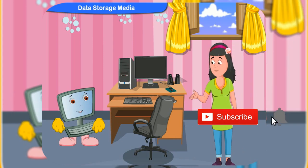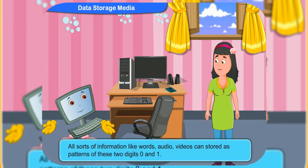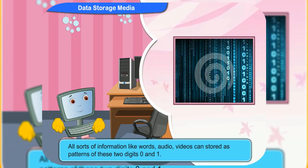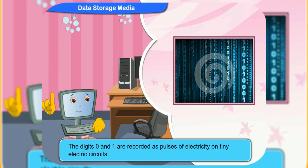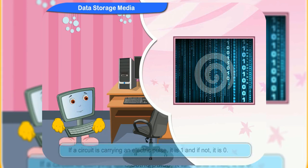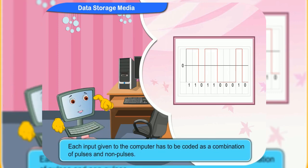What does these two binary digits or bits do? All sorts of information like words, audio, video can be stored as patterns of these two digits 0 and 1. The digits 0 and 1 are recorded as pulses of electricity on tiny electric circuits. If a circuit is carrying an electric pulse, it is 1, and if not, it is 0. Each input given to the computer has to be coded as a combination of pulses and non-pulses.